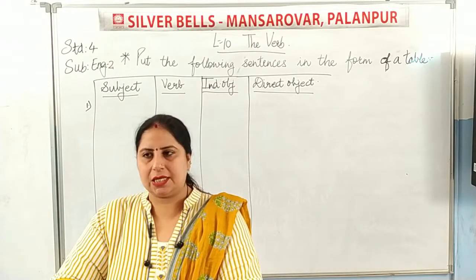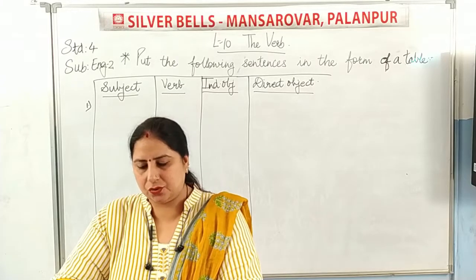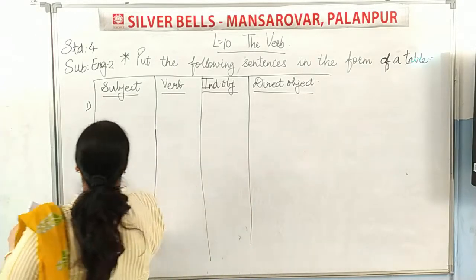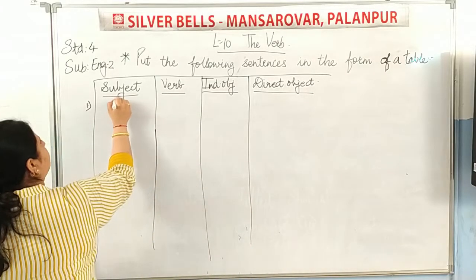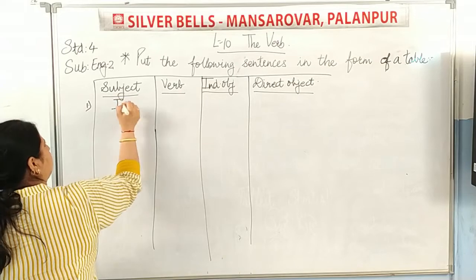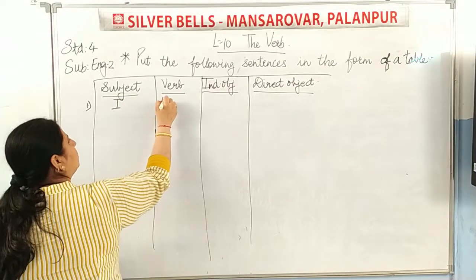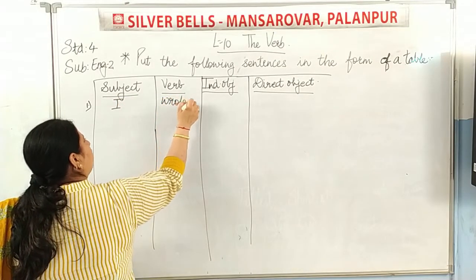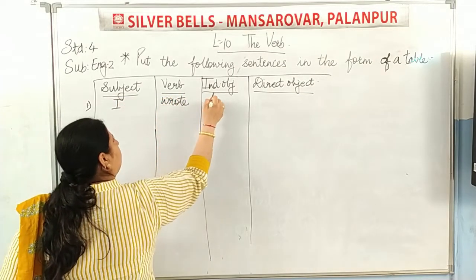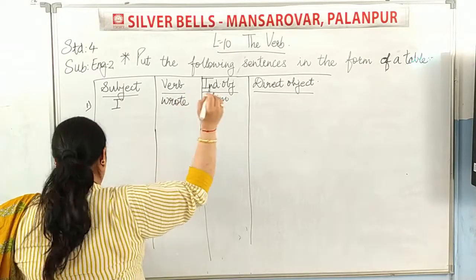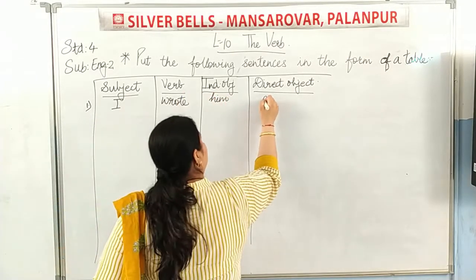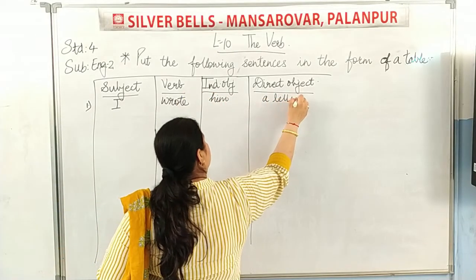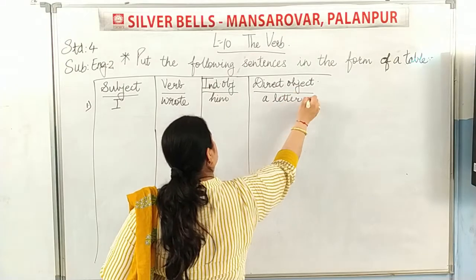The first sentence is: 'I wrote him a letter.' So 'I' is the subject, 'wrote' is the verb, 'him' is the indirect object, and 'a letter' is the direct object.